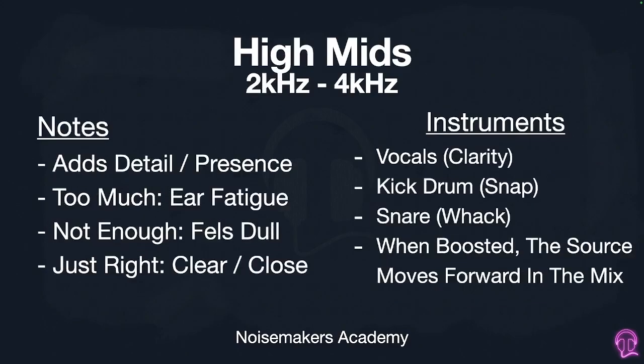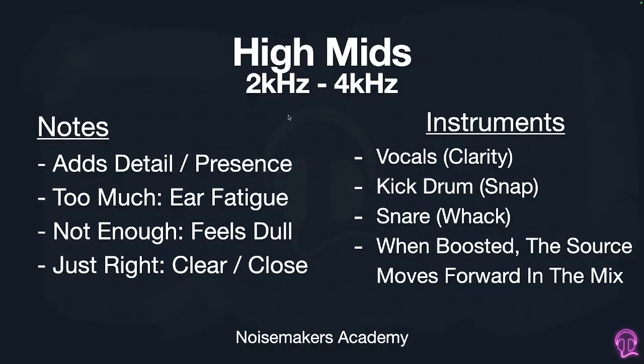That brings us to our high mids, which are 2 kilohertz to 6 kilohertz. Kilohertz is shortened to 'k,' so 2 kilohertz and 2k mean the same thing. Our high mids are going to add detail. Too much is going to give you ear fatigue, not enough is going to feel dull, and just right is going to feel clear and close. Instruments here include vocals for clarity, the kick drum for snap, the snare drum for whack, and when boosted the source moves forward in the mix.